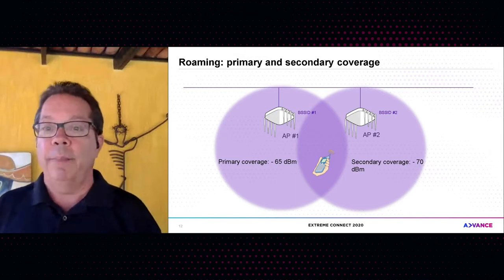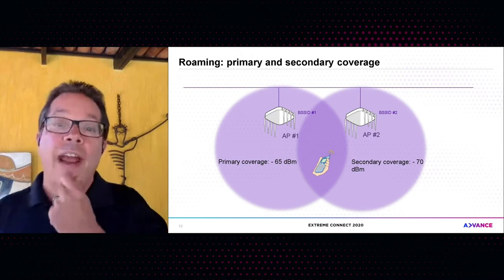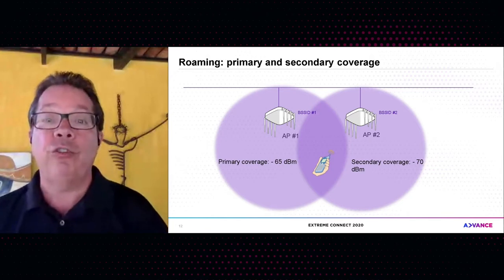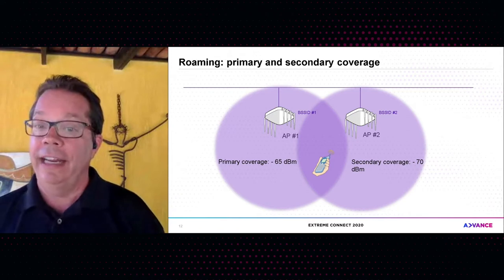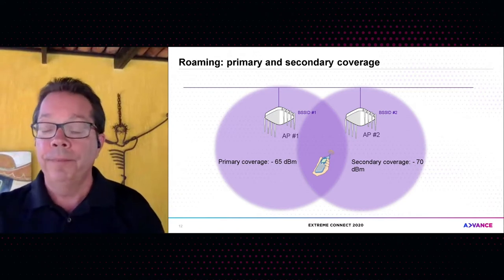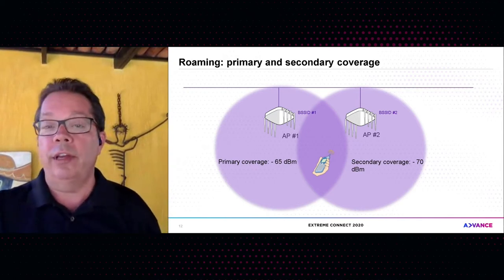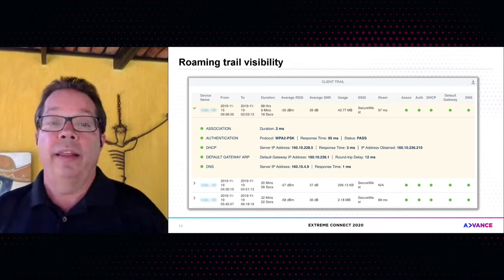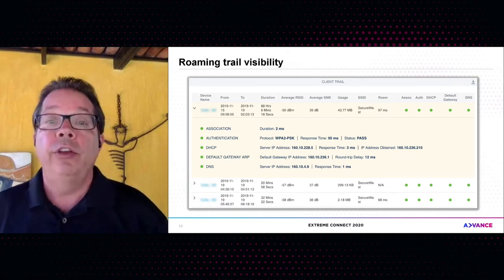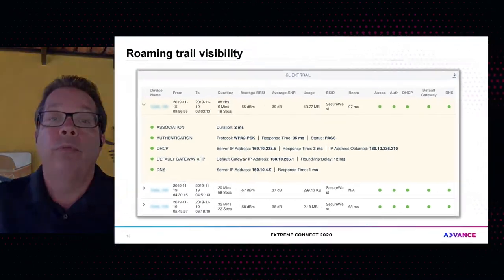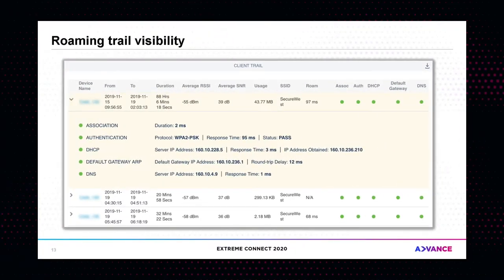Another mistake people make is putting too many APs at too high power — the client hears 20 other APs between -65 and -70 dBm, causing problems. Good prediction modeling apps help with primary and secondary coverage design. In Extreme IQ, our cloud management platform, we provide visibility into roaming metrics, showing over a historical timeline how long it took a client to roam. You want roaming to happen in under 150 milliseconds, and ideally under 50 milliseconds, so time-sensitive applications are not negatively impacted. We can show the whole roaming process from layer two through layer three.